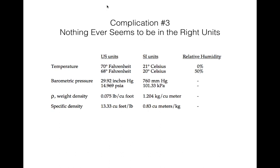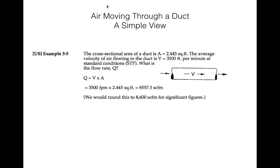A lot of exam problems involve tricks with confusing units — they'll give you four answers and one of them works only if you didn't do the conversions, so it's tricky. We're looking at units for temperature, barometric pressure, and density in different systems. For air moving through a duct, Q equals velocity times area. You can do that with a round duct or a square duct — for a round duct just use pi r squared for the area.